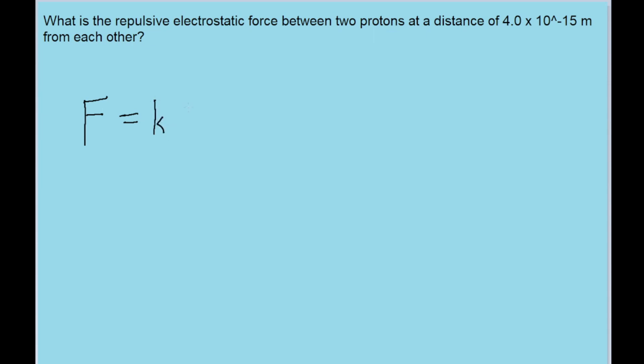Coulomb's Law states that the force between two electrically charged particles is equal to the Coulomb constant k times the product of the two charges divided by the square of the distance between them. Now the Coulomb constant k always has